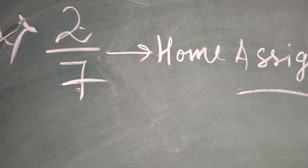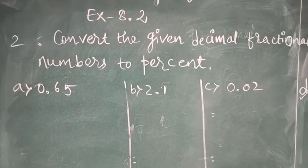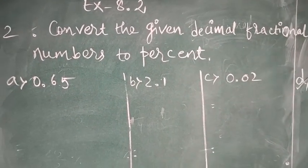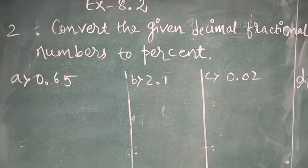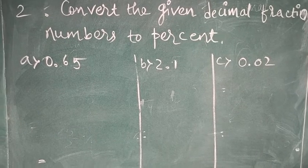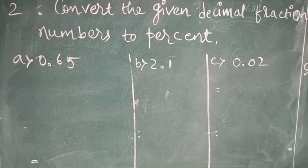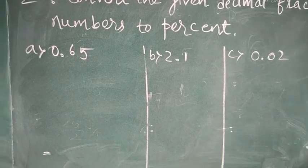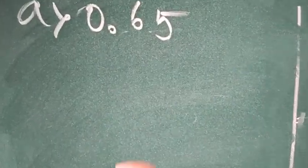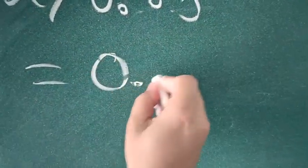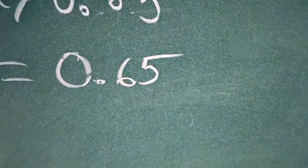Let us proceed to question number 2. Proceeding to the next question, question number 2, convert the given decimal fractional numbers to percent. Now the decimal number is given. The decimal numbers should be converted into the percentage. It is also the easiest one. You have to multiply the given number with the 100 only.